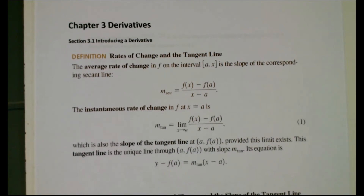The tangent line is a unique line through the point (a, f(a)), where the slope of the tangent line m_tangent gives us the equation: y minus f(a) equals the slope of the tangent line times the quantity x minus a.